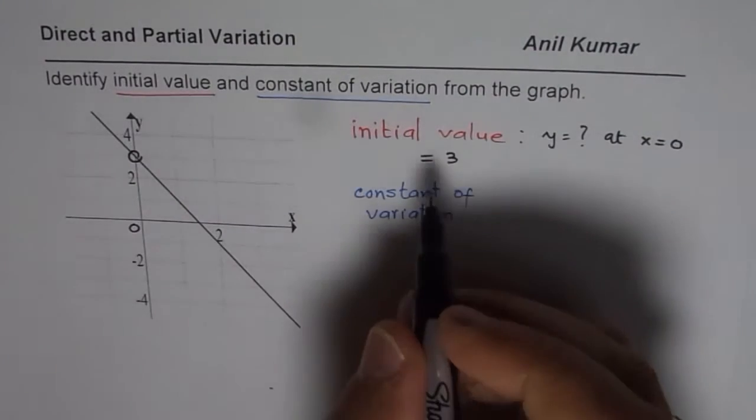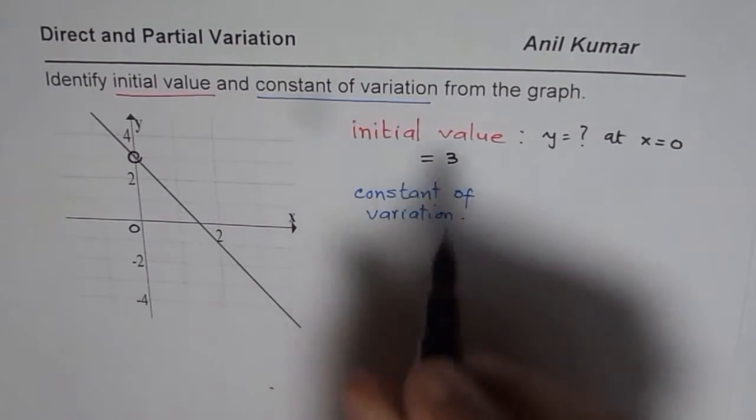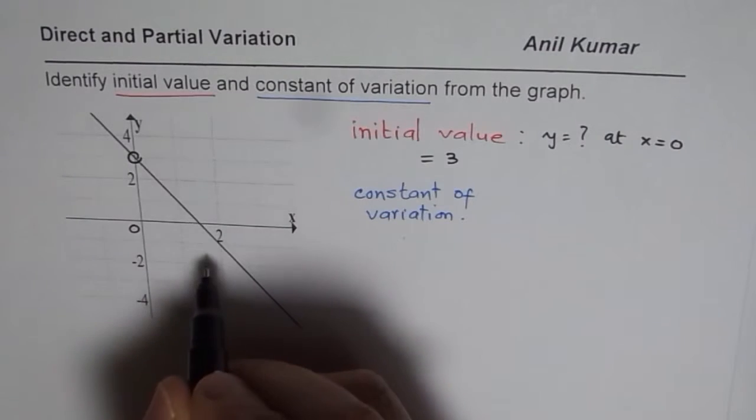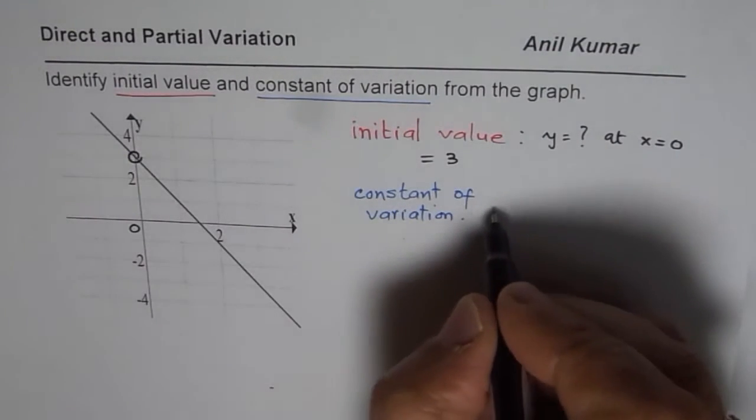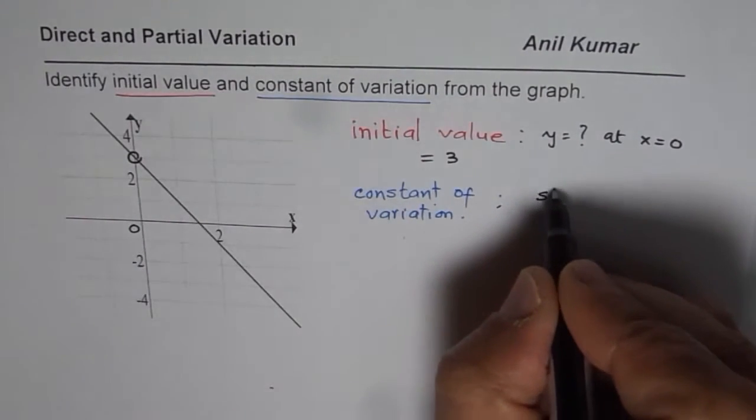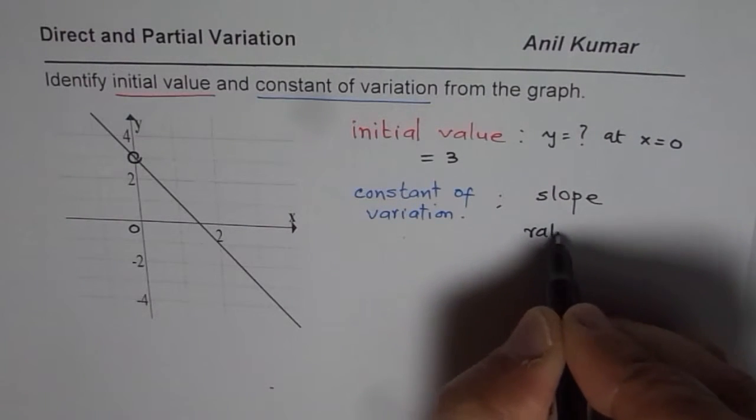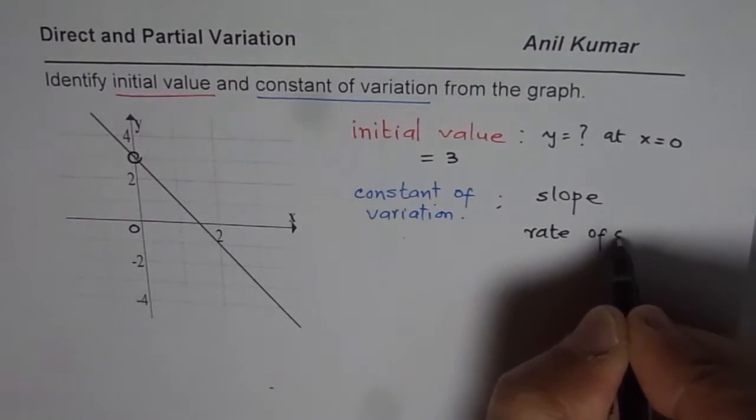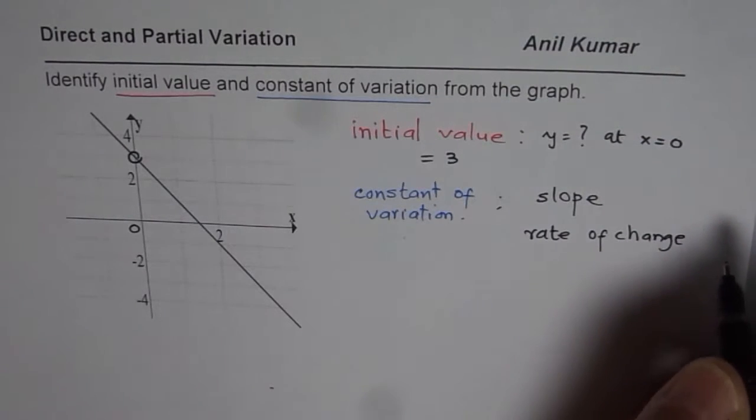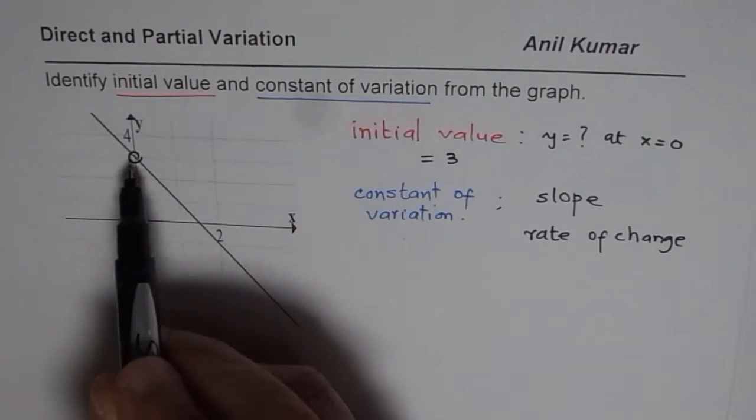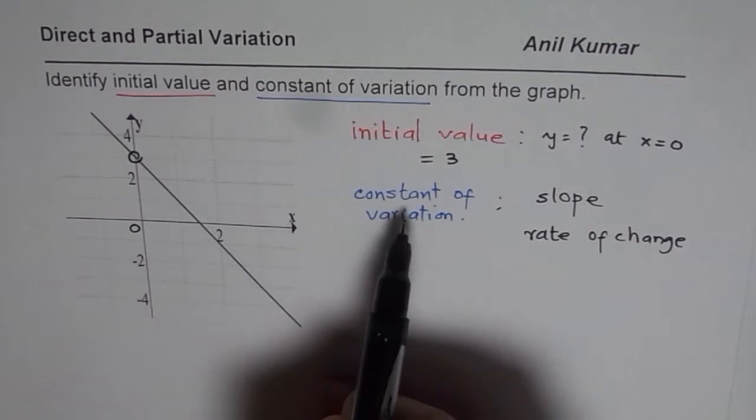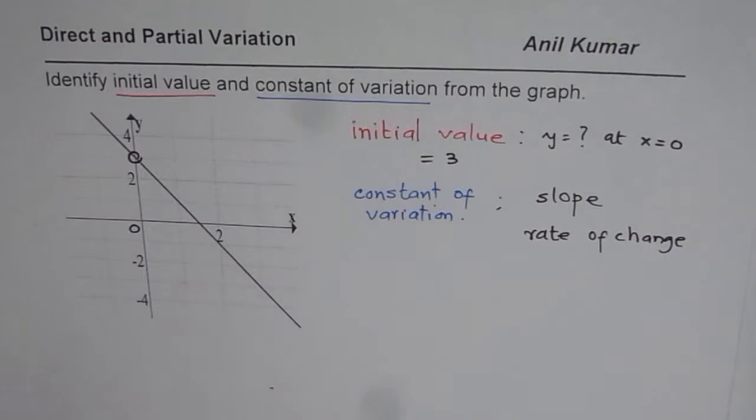Now the second part is to find constant of variation. Constant of variation will always be the slope. We can call this as slope or sometimes as rate of change. At what rate is the value changing? That is always constant and we need to find that value. How do we find that value?